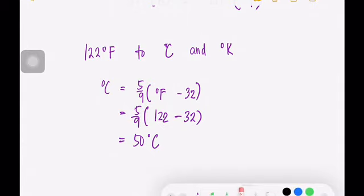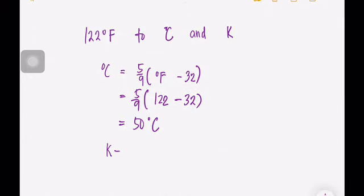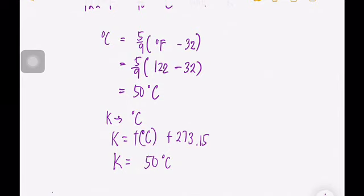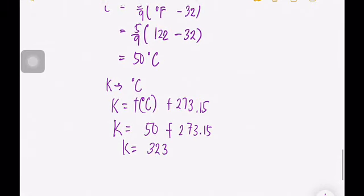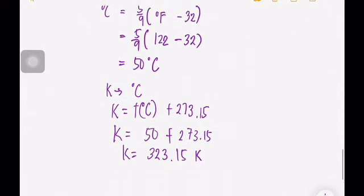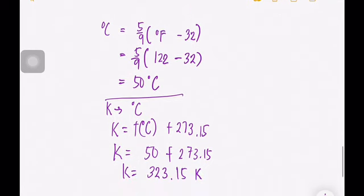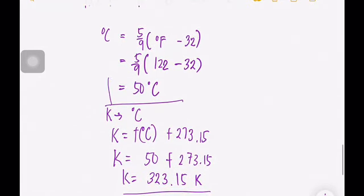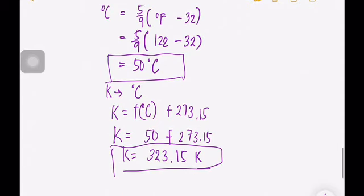Since Kelvin is related to degrees Celsius, Kelvin equals the temperature in Celsius plus 273.15. So 50 degrees Celsius plus 273.15 gives us 323.15 Kelvin. Therefore, 122 degrees Fahrenheit equals 50 degrees Celsius, which equals 323.15 K.